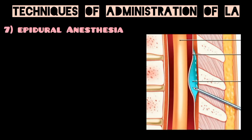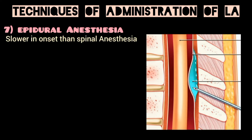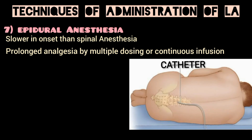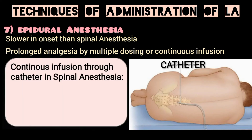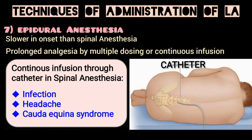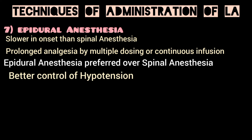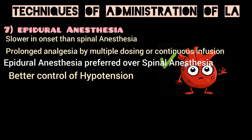Epidural anesthesia involves injecting the anesthetic into the epidural space. It is slower in onset than spinal anesthesia, but has the advantage of prolonged analgesia by multiple dosing or continuous infusion through a catheter placed in the epidural space. Continuous infusion through a catheter in spinal anesthesia has been implicated in causing complications like infection, headache, or cauda equina syndrome, which is why epidural anesthesia is generally preferred. Its slower onset also allows better control of hypotension from sympathetic blockade and reduces blood loss.